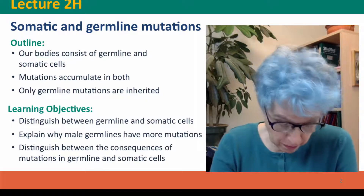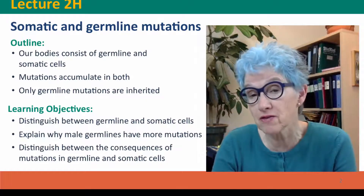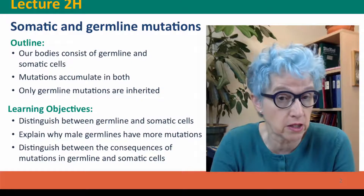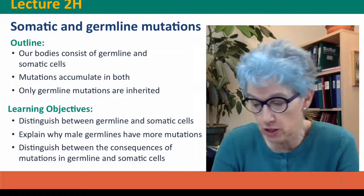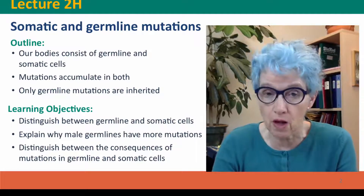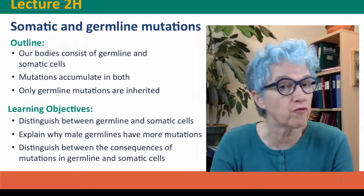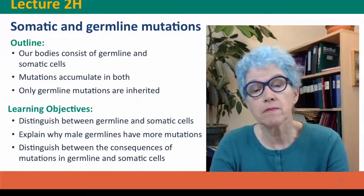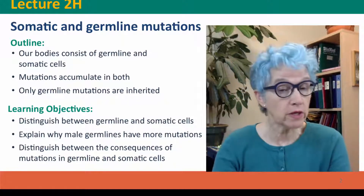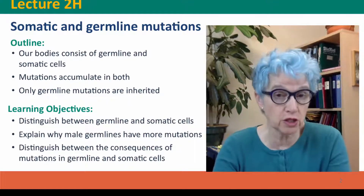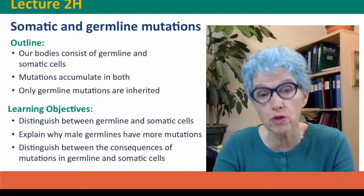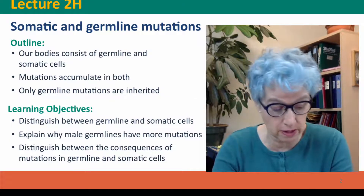Our bodies basically consist of two kinds of cells. Most of our cells are what we call somatic cells — they become the tissues of our body — but some cells are of the germline and they're going to form the gametes. Mutations accumulate in both kinds of cells, but only mutations in the germline can be inherited because they're the only ones that will become part of our gametes.